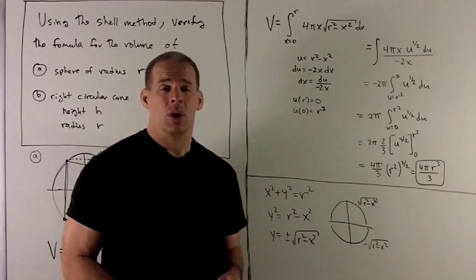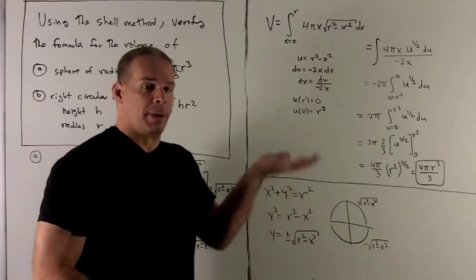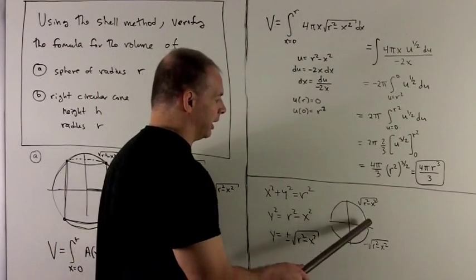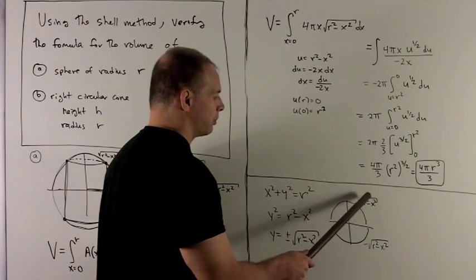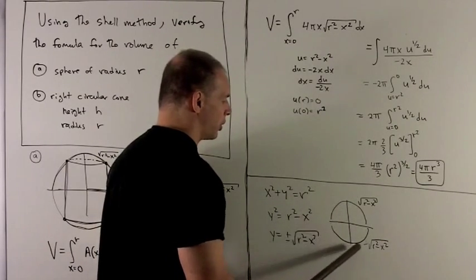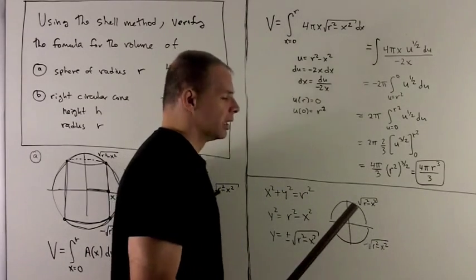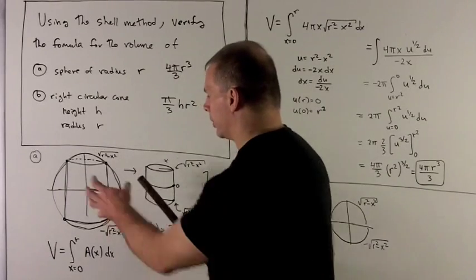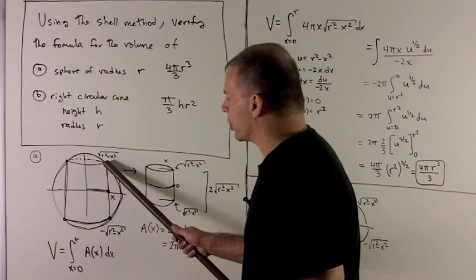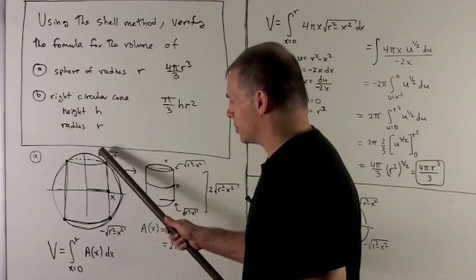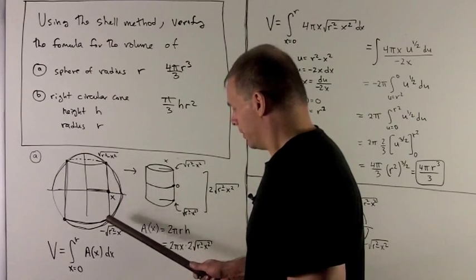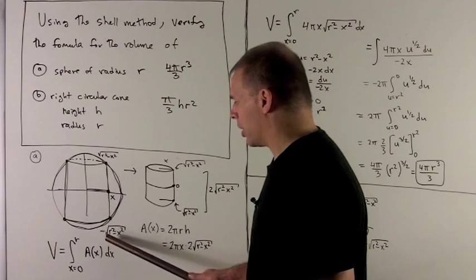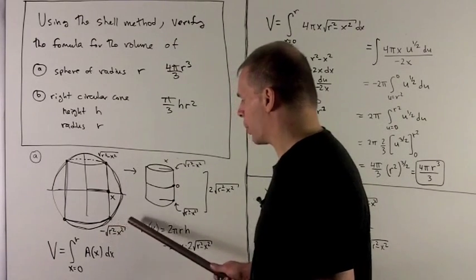For the plus solution, positive y means above the x-axis, negative y means below the x-axis. So our two solutions are this curve up here for the positive square root, this curve down here for the minus square root. When I look at this representative cylinder and pull it out, this point here is on the curve, so that's √(r² - x²). The point at the bottom is -√(r² - x²).